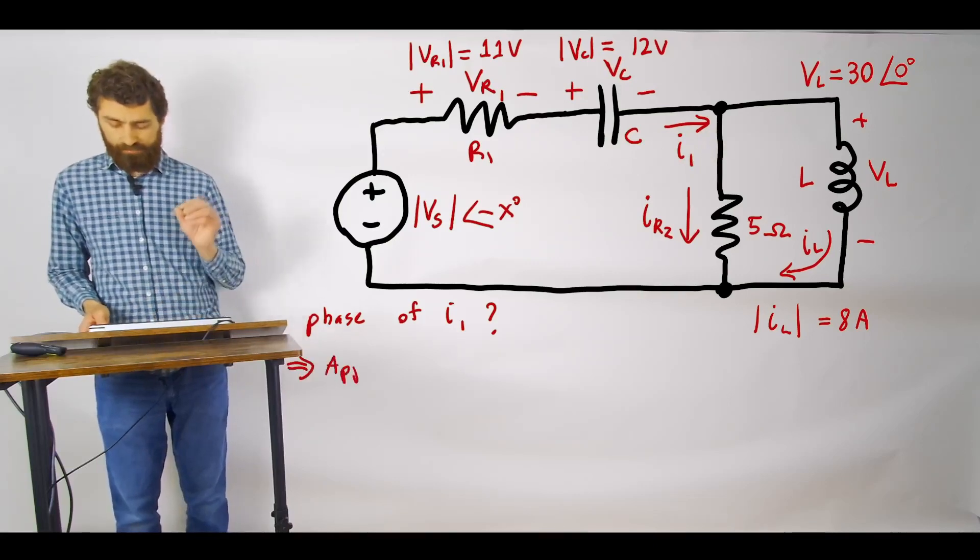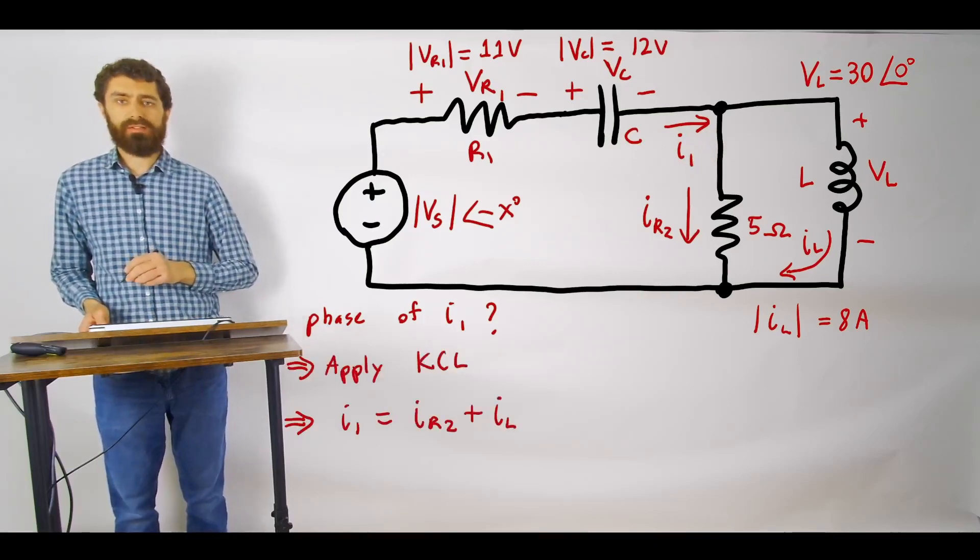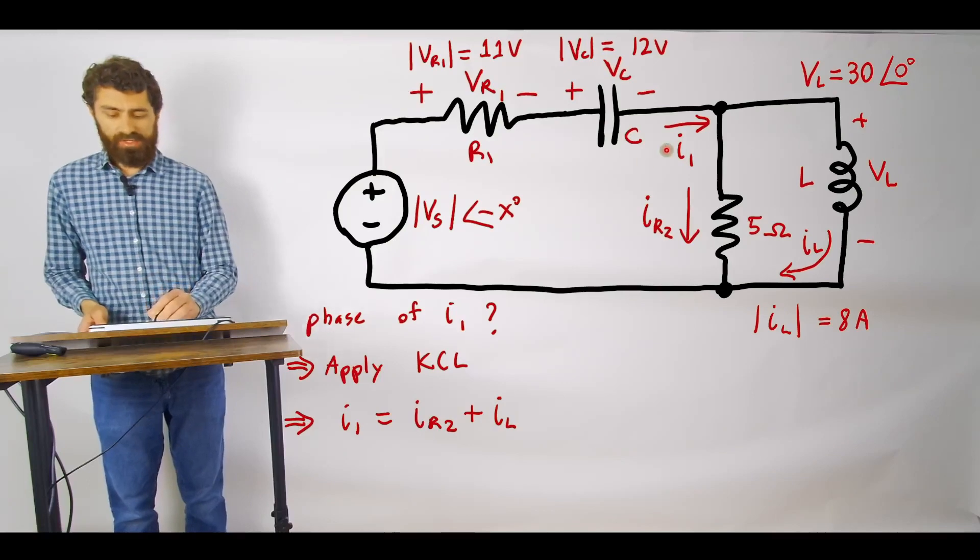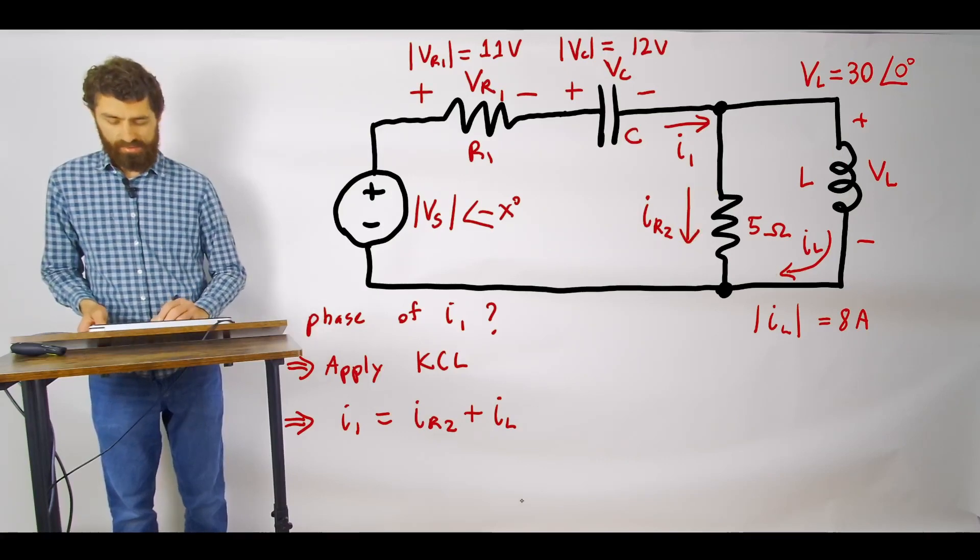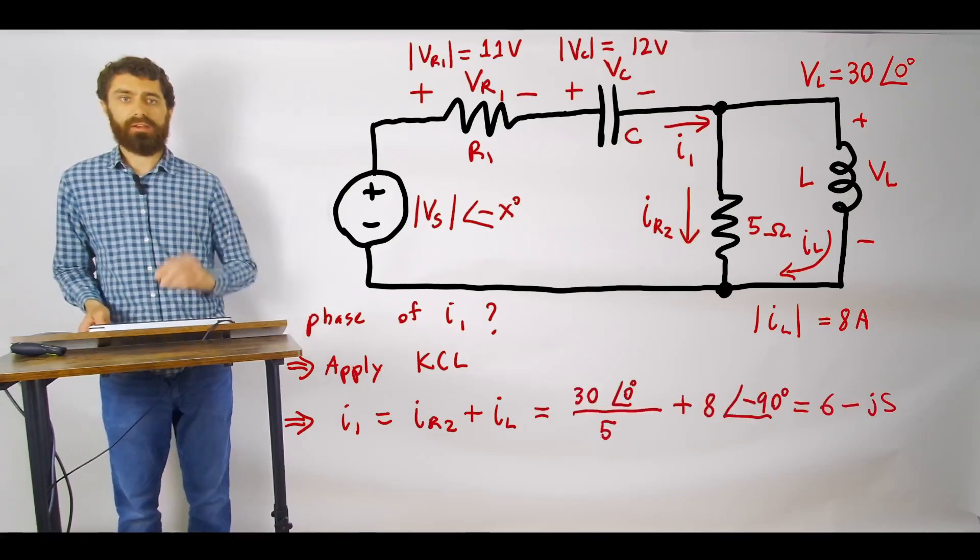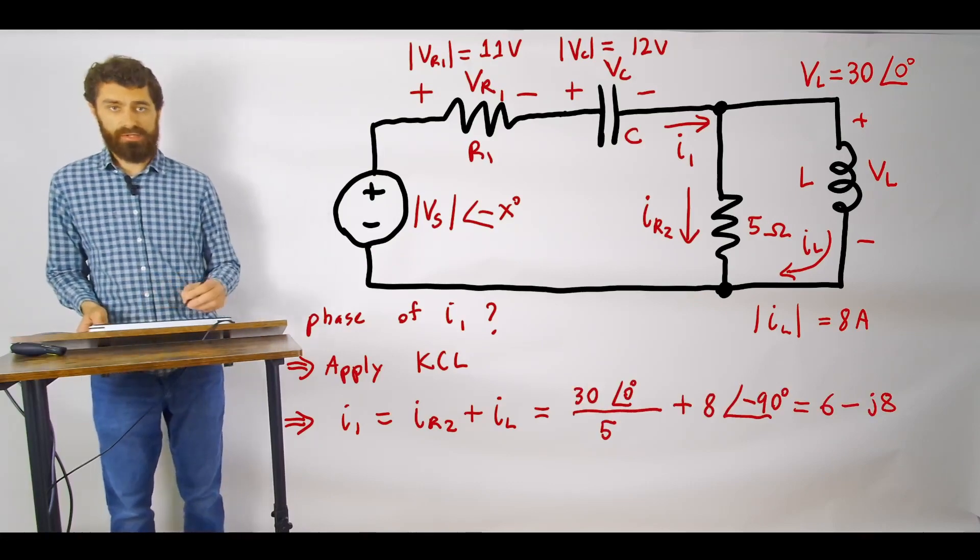If we know that we can apply KCL to determine what the magnitude and phase of the current I1 is. So we'll go ahead and apply KCL. The current in I1 is equal to the current out which is IR2 and IL here.